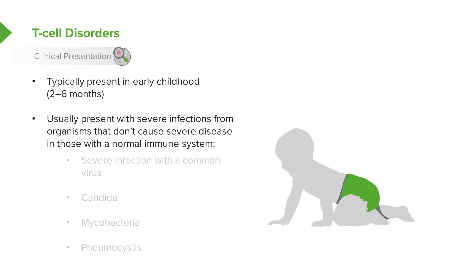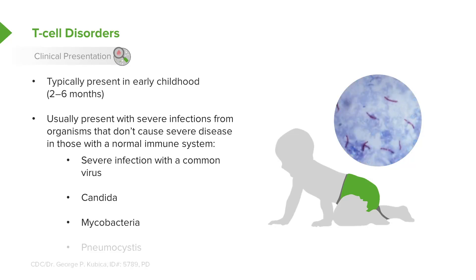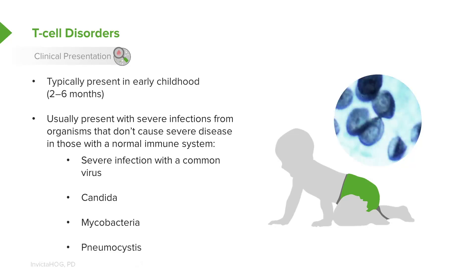They usually present with severe infections from organisms that don't cause severe disease in those with a normal immune system. Examples include severe infection with a common virus, severe infection with yeast such as oral candidiasis gone horribly wrong, mycobacterium, or pneumocystis. Pneumocystis is a common presentation for patients with no T-cells.